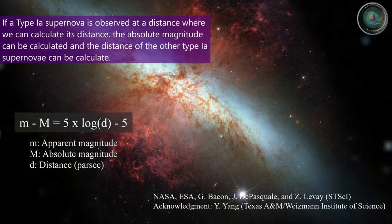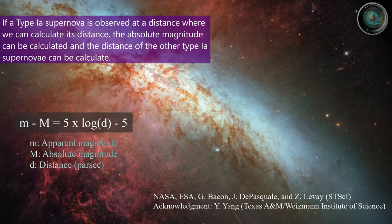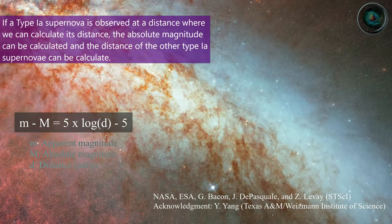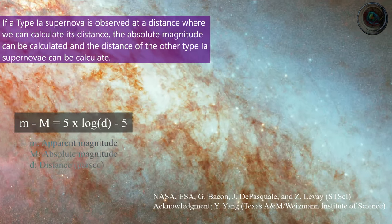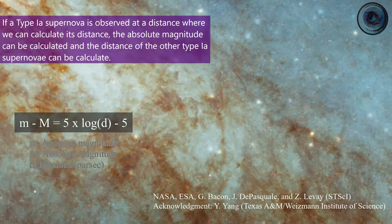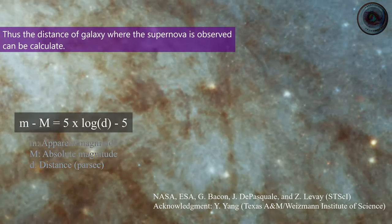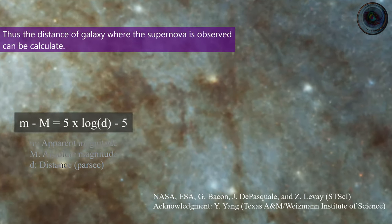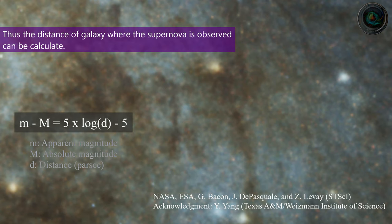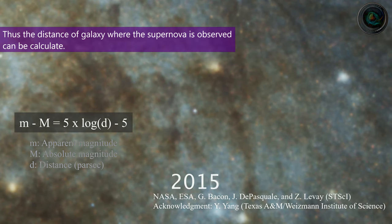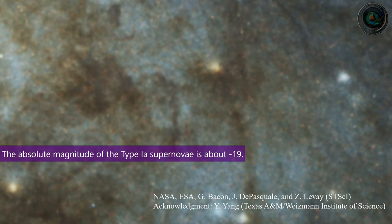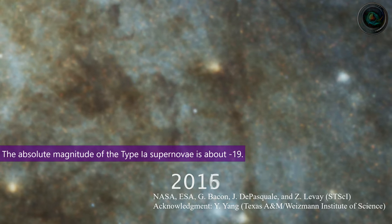If a Type 1A supernova is observed at a distance where we can calculate its distance, the absolute magnitude can be determined, and the distances of other Type 1A supernovae can then be calculated. Thus, the distance of the galaxy where the supernova is observed can be calculated. The absolute magnitude of Type 1A supernovae is about minus 19.